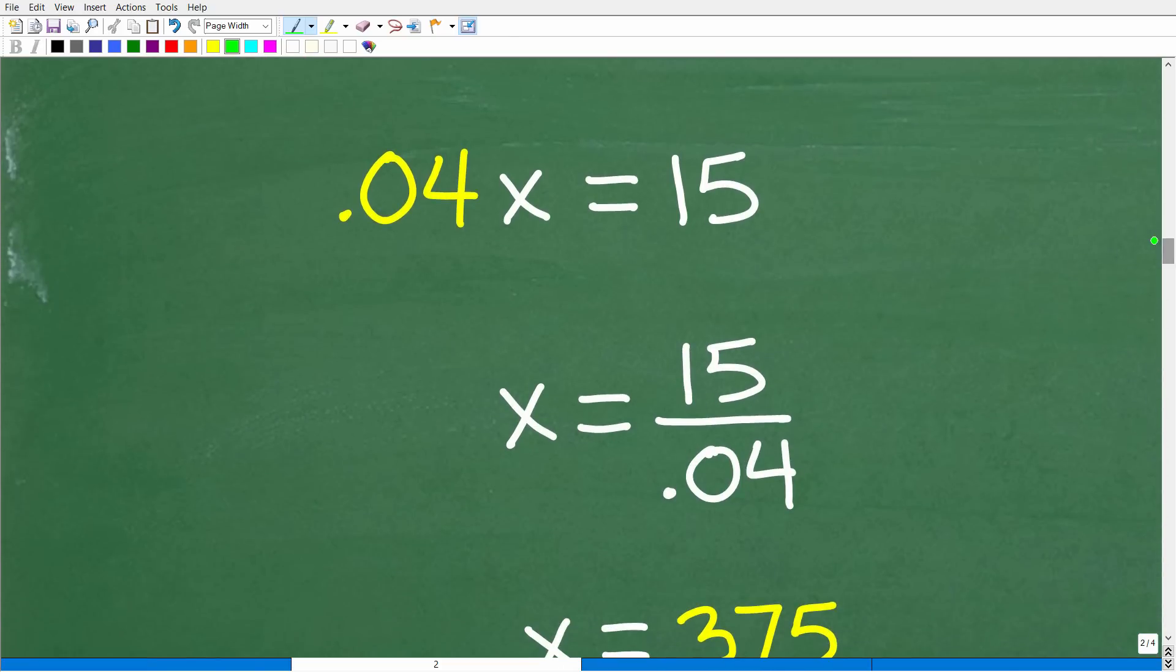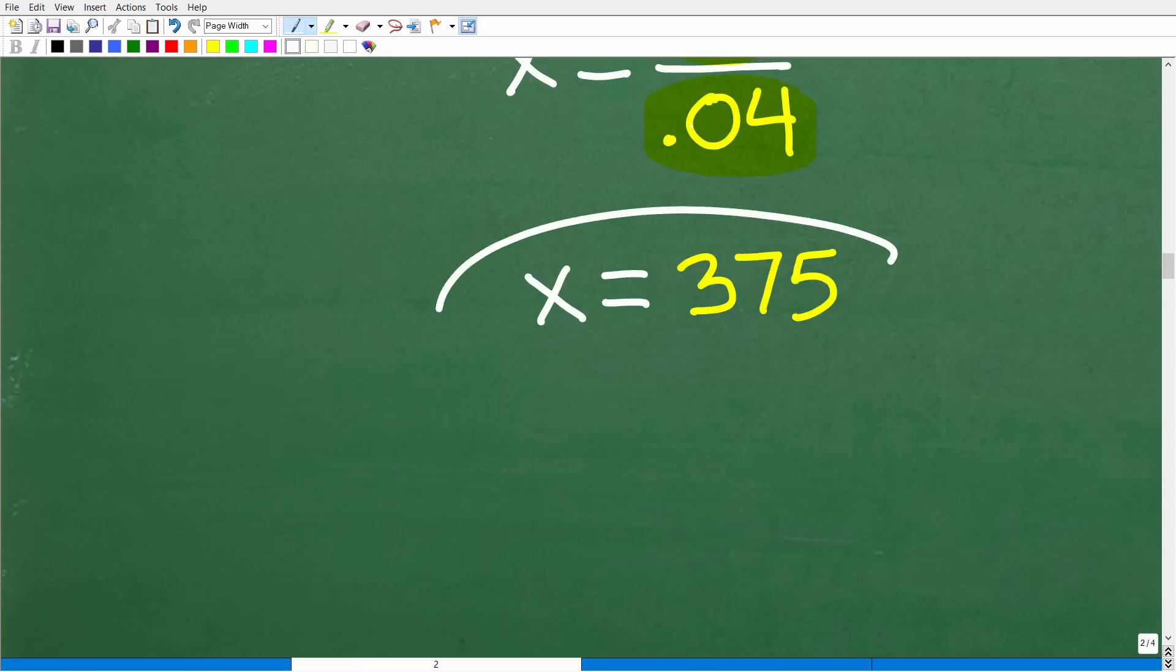And this is a simple one-step algebra equation. So, 0.04 times x is equal to 15. All we have to do is divide both sides of the equation by 0.04. Now, at this point, for those of you that did not use algebra, but you solved this problem, what you did in some manner was take that 15 and divide it by 0.04. So, it's okay if you didn't set up an algebra equation, as long as you understand what you are doing to solve the problem. So 15 divided by 0.04 is equal to 375.